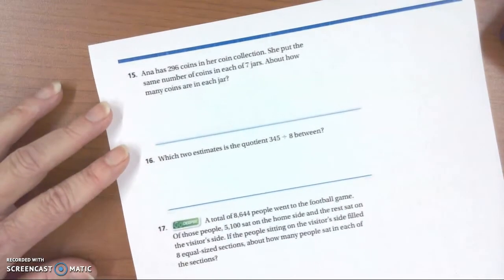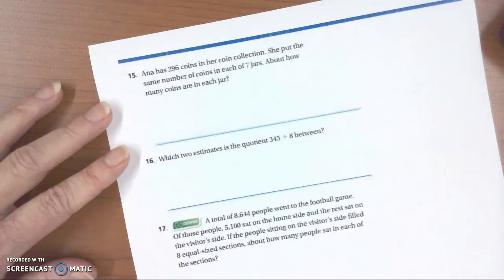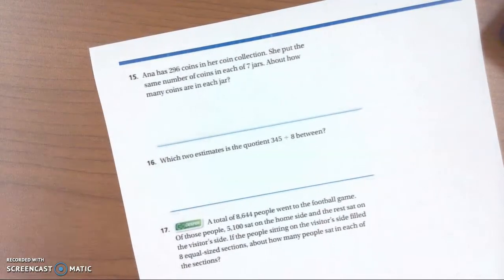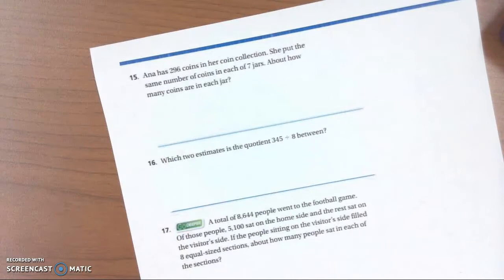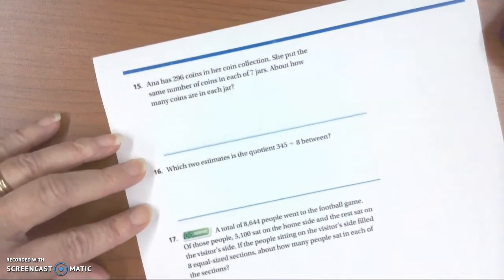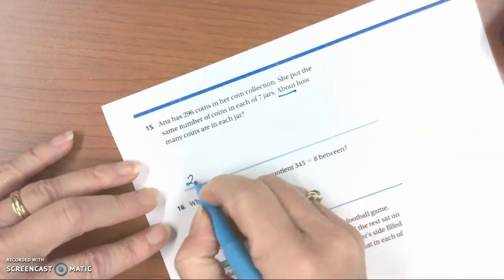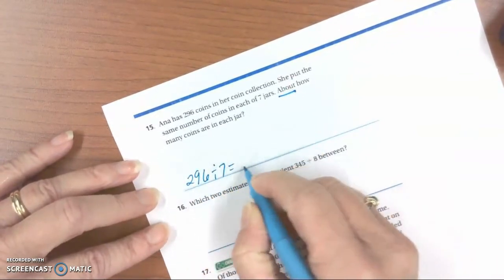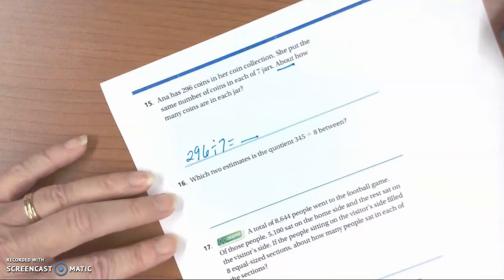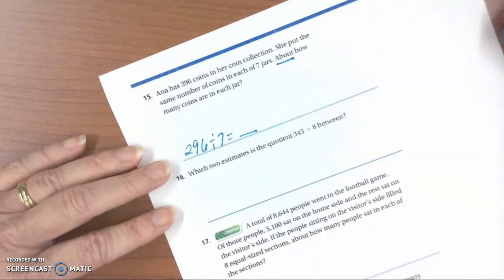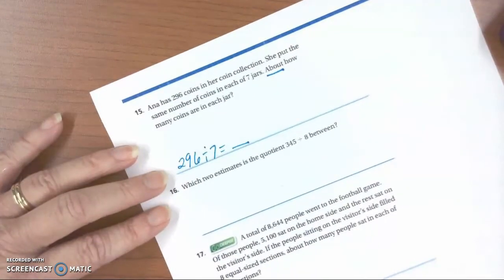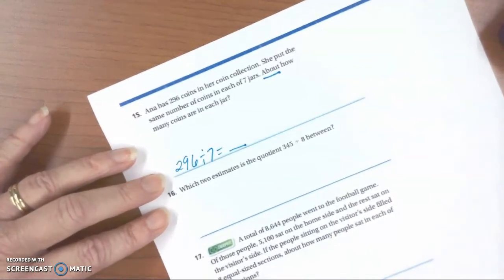Anna has 296 coins in her coin collection. She put the same number of coins in each of 7 jars. About how many coins did she put in each jar? If we're going to do this problem, we know that we are going to estimate. So we have 296 divided by 7 is our expression that we're going to solve for. And we can use multiples as a good strategy to do this.